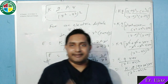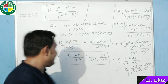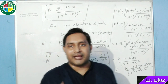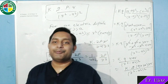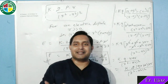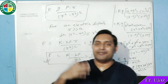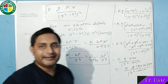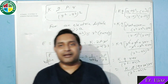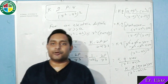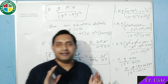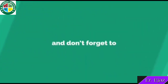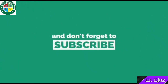तो students, यह expression याद रखना होगा: E = 1 upon 4π epsilon naught × 2P upon R³। CBSE examinations में MCQ भी आने लगे हैं। यह 5 marks का derivation है — CBSE 2017 और 2013 में भी आया था। Examinations के लिए यह derivation बहुत important है।